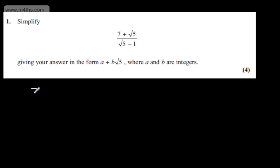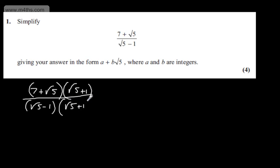I'm going to multiply the numerator and the denominator of the fraction by root 5 plus 1. So in the numerator, we will have 7 plus root 5 multiplied by root 5 plus 1. And then in the denominator, we will have root 5 minus 1 multiplied by root 5 plus 1.